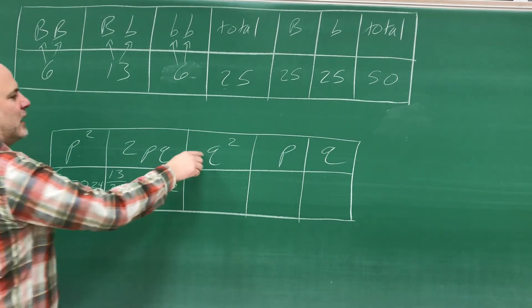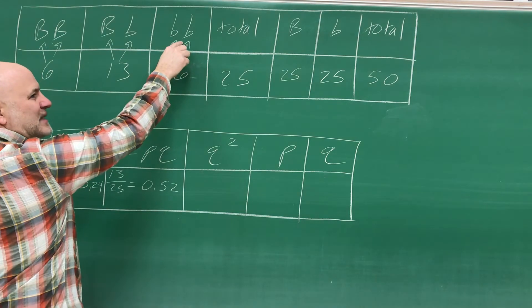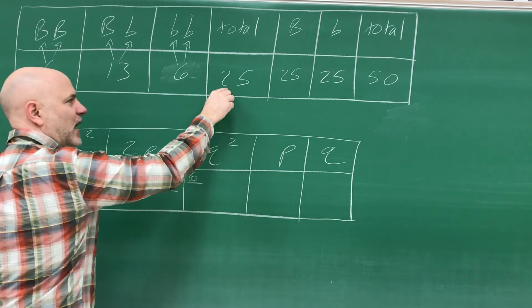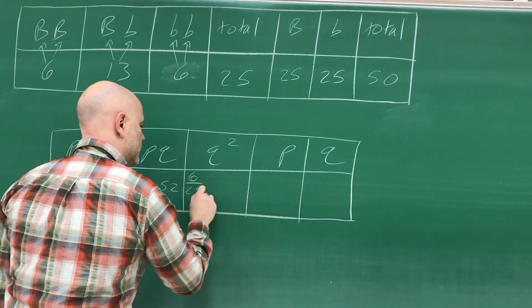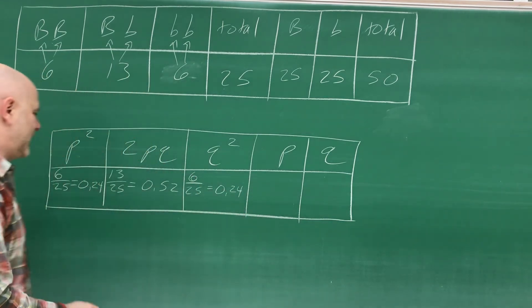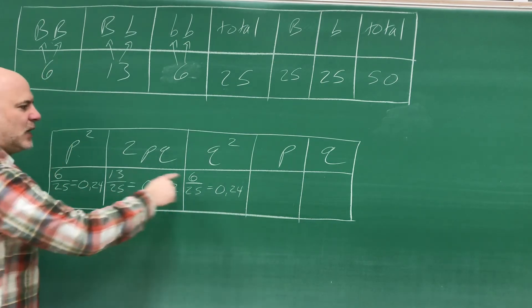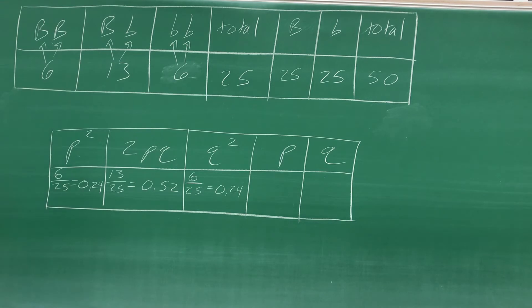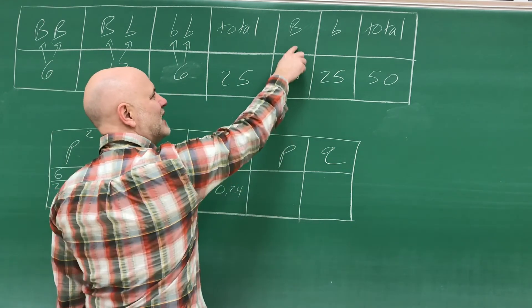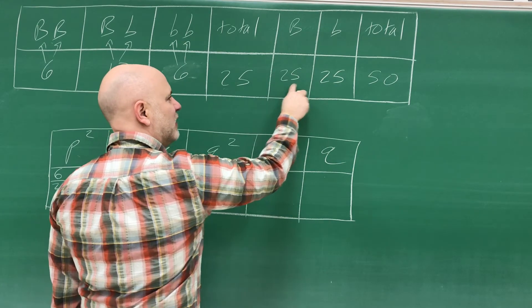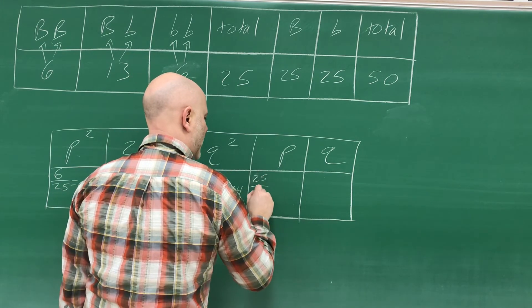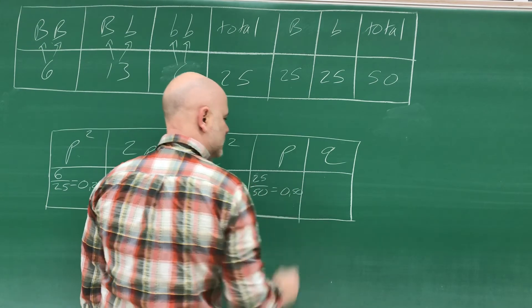Q² is the frequency of the homozygous recessive individuals in the population. You take the number of individuals that are homozygous recessive and divide by the total number of individuals in the population, which is 25 — six divided by 25 equals 0.24. Now these three numbers should equal 100% or one. To determine what p is — p is the frequency of the dominant allele — you take how many dominant alleles you have and divide by the total number of alleles. That's 25 divided by 50, which equals 0.50.